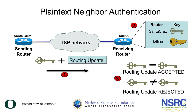Let's look at how plaintext neighbor authentication works. This does not use any cryptographic protection. Two routers — say one in Santa Cruz and one in Tullen — each have a database of keys associated with a particular router. When Santa Cruz sends a routing update to Tullen, it adds its associated key. Tullen looks up the key in its database; if both keys match, the update is accepted; if not, it's rejected. The problem is that anyone sniffing the wire could see the key and impersonate a routing peer.